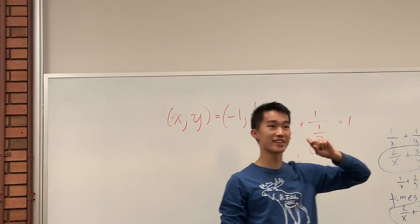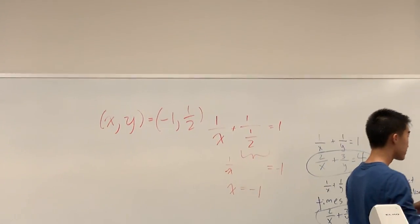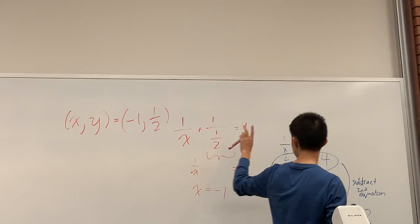Alright, how many of you guys got that? Alright, nice! 0.5 is the same as 1 over 2.